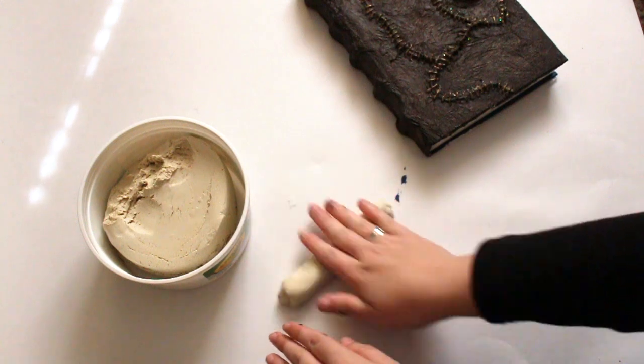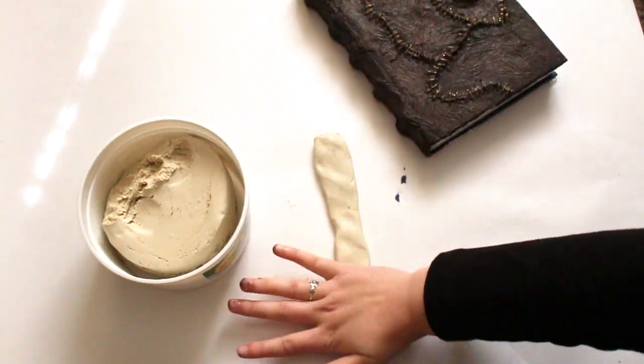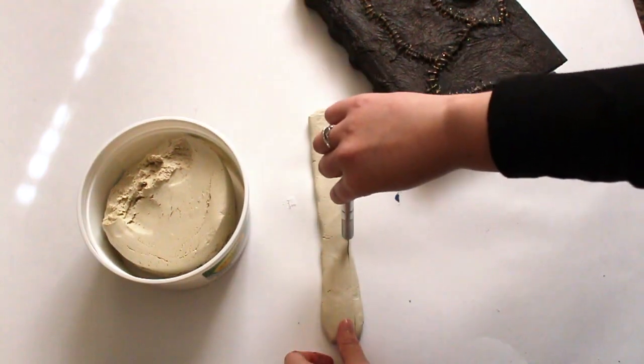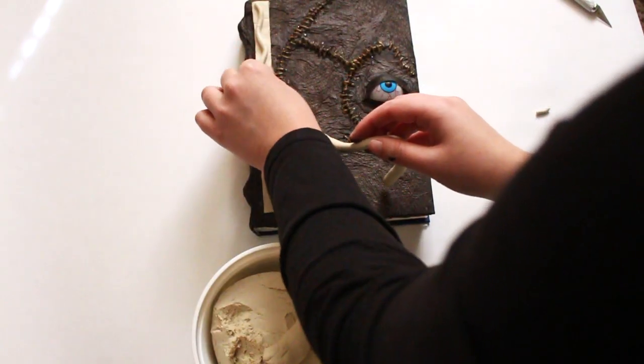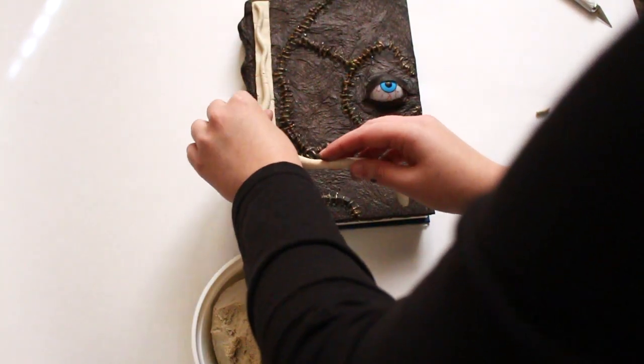Now for what I found to be the tedious part. With the clay, mold the shapes of the metal pieces of the book. The one closest to the spine is a long flat rectangle with a snake on top.